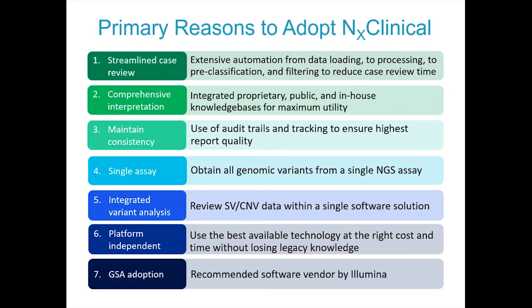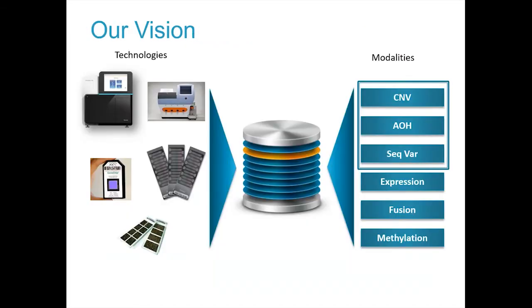As an example, we are now the recommended software for the Illumina Global Screening Array used in cytogenetics — an affordable SNP array technology that can be used independently for cytogenetics or integrated with NGS panels. Our company's vision has always been platform and technology agnostic: it doesn't matter what technology you're using or what modalities you want to look at — they all reside within the same database to provide the whole picture of the sample. Currently we're supporting CNVs, AOH, and sequence variants, with more components to be added over time.